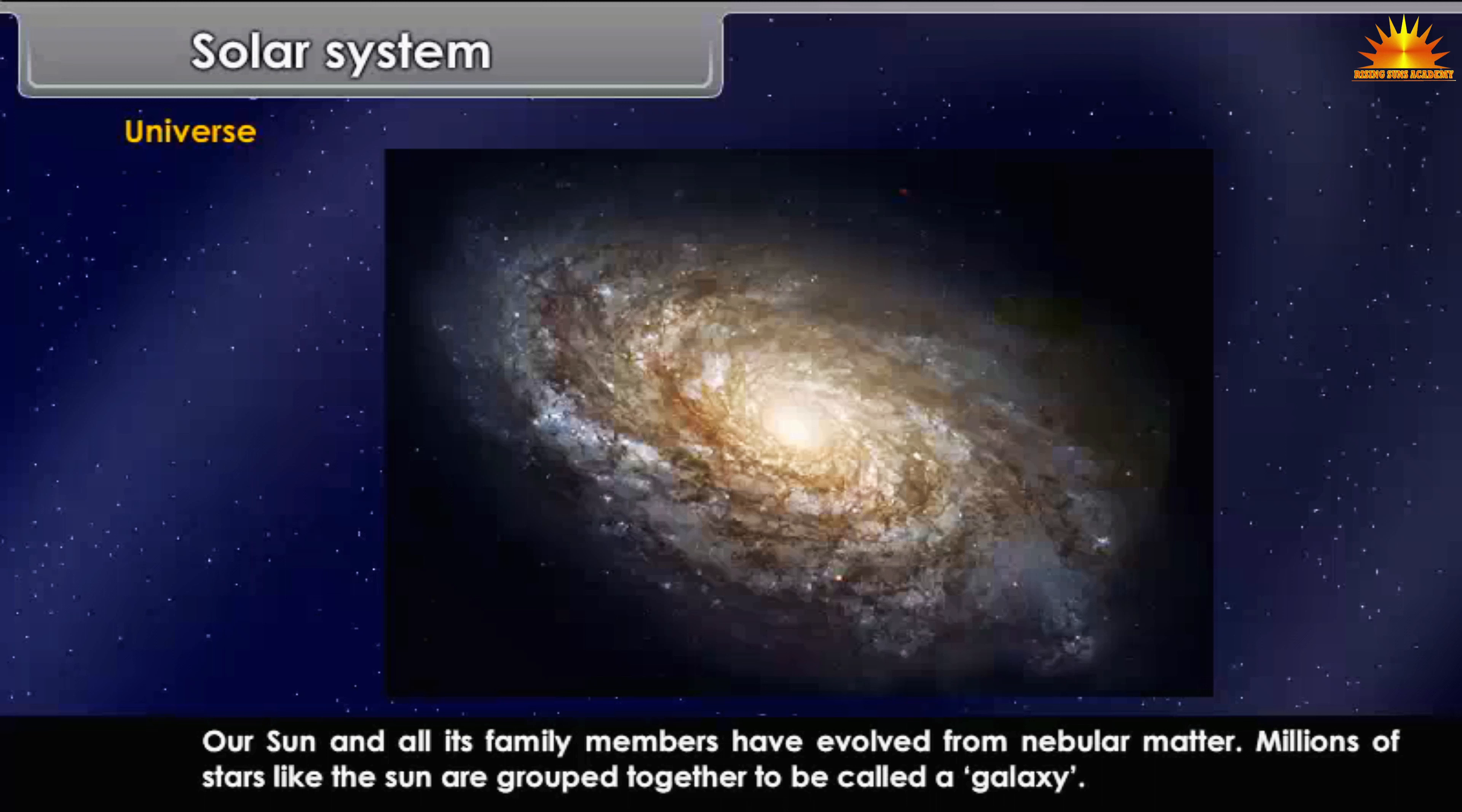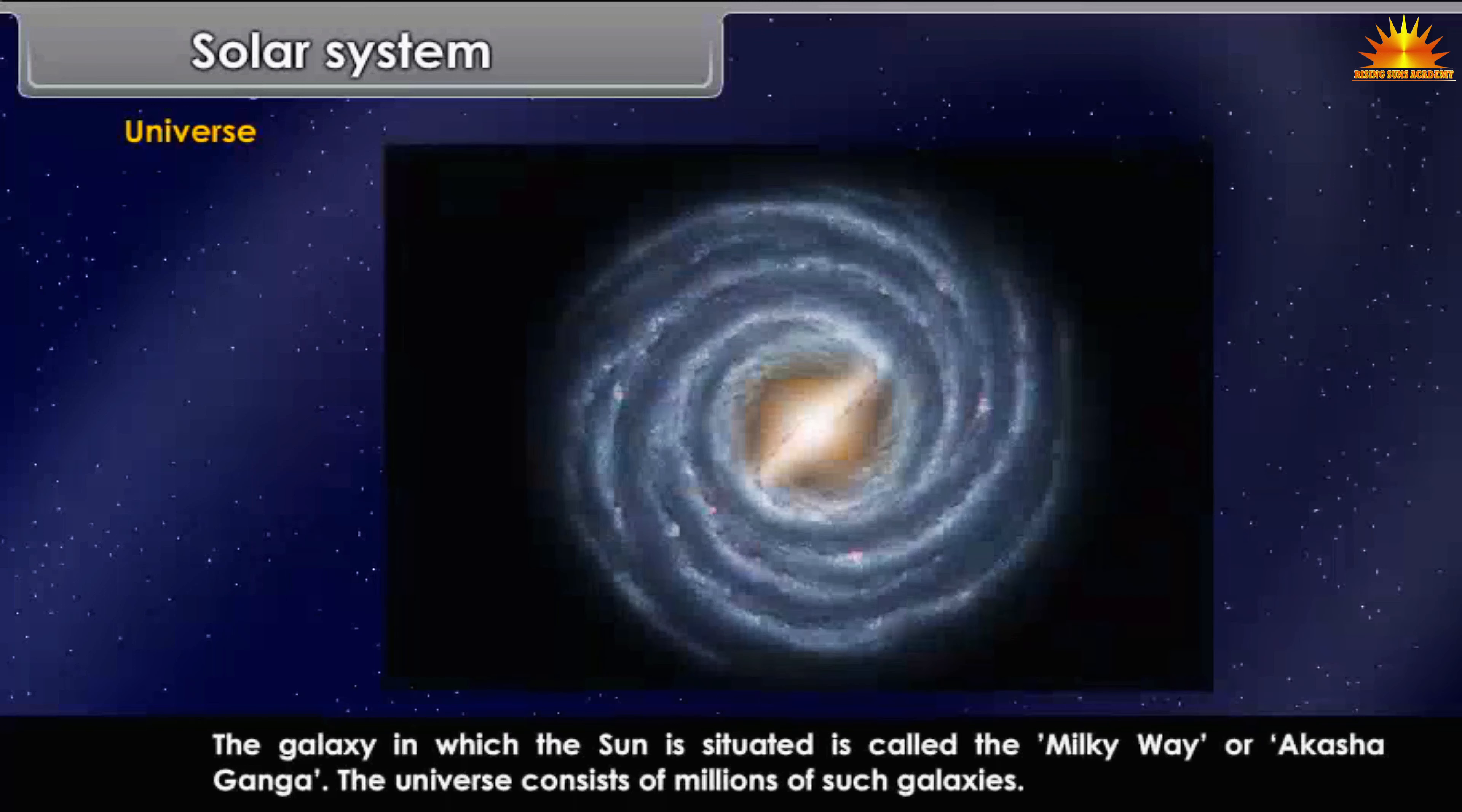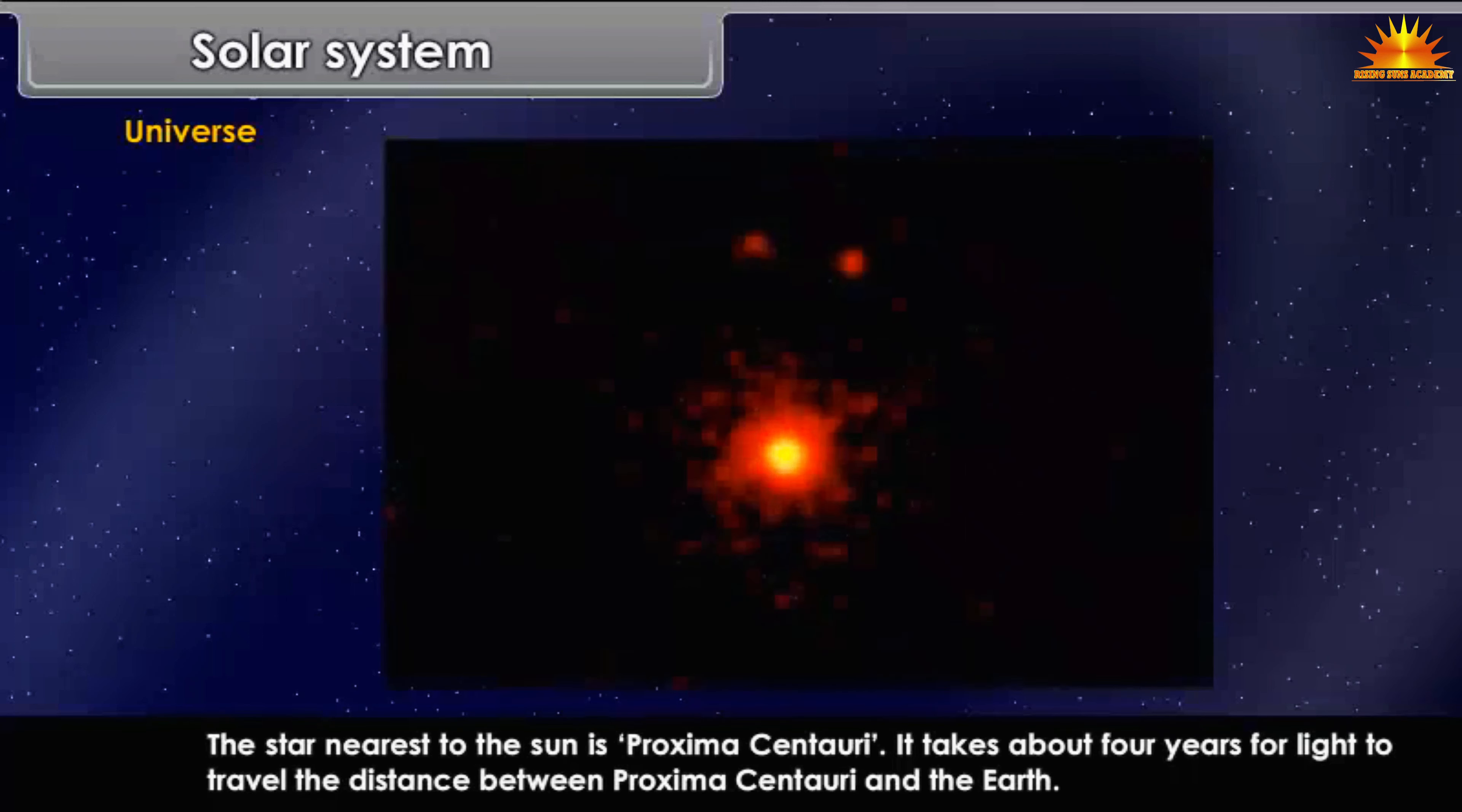Millions of stars like the sun are grouped together to be called a galaxy. The galaxy in which the sun is situated is called the Milky Way or Akash Ganga. The universe consists of millions of such galaxies. The star nearest to the sun is Proxima Centauri. It takes about four years for light to travel the distance between Proxima Centauri and the Earth.